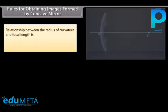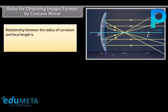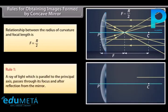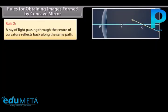Rules for obtaining images formed by concave mirrors. The relationship between the radius of curvature and focal length is: F equals R upon 2. Rule 1: a ray of light which is parallel to the principal axis passes through its focus after reflection from the mirror. Rule 2: a ray of light passing through the center of curvature reflects back along the same path.